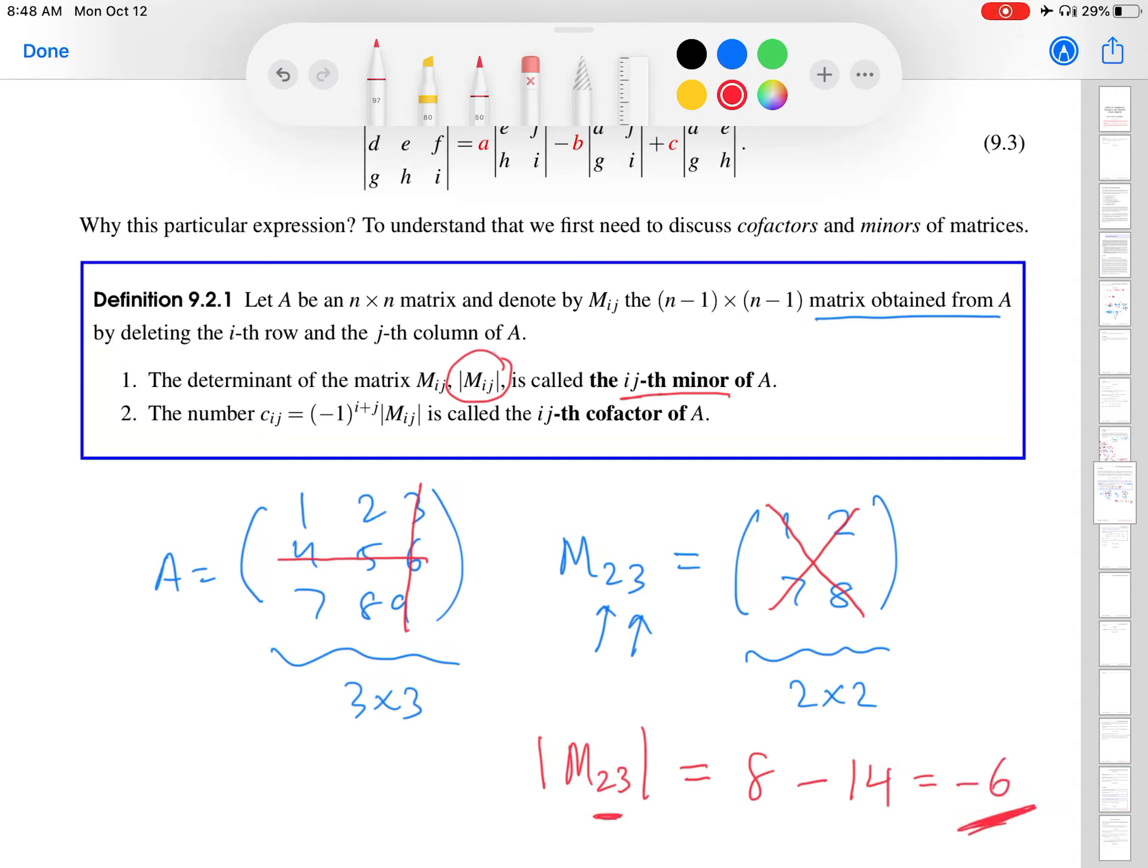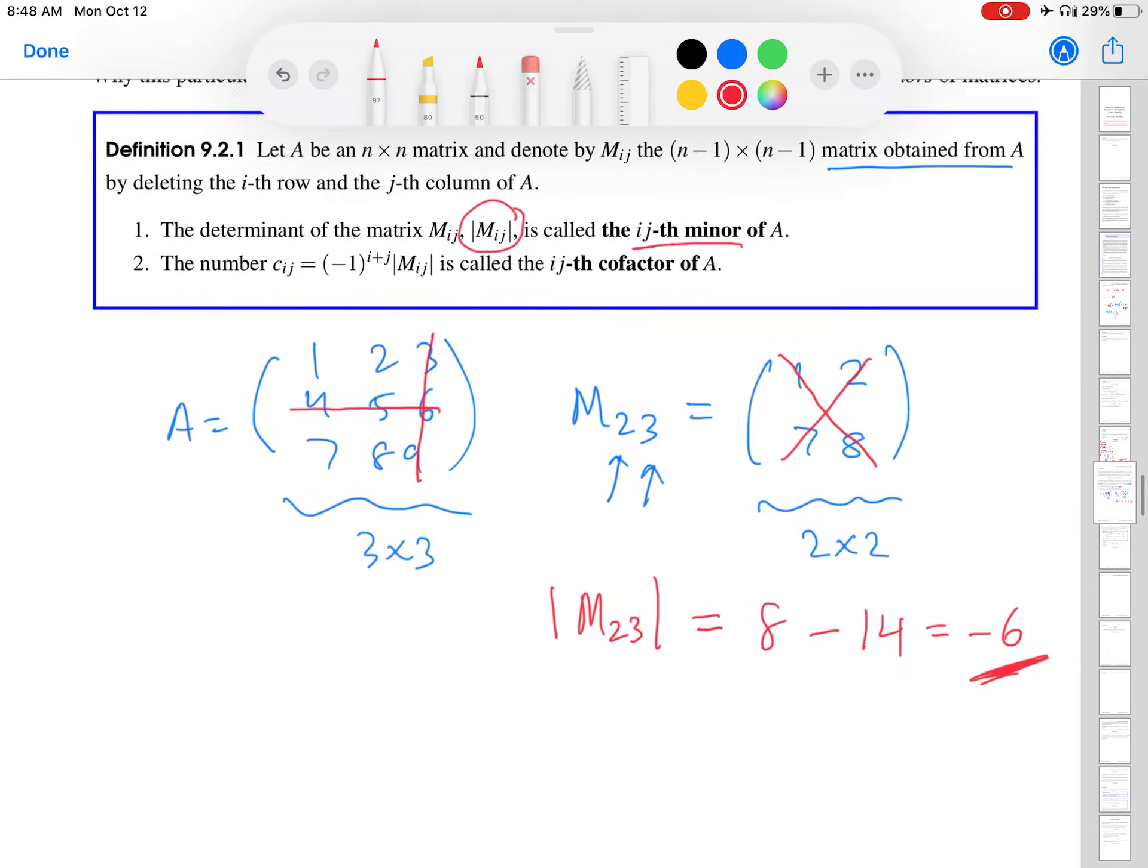So this would be the minor, the 2,3 minor of A. And I want to encourage you to think of this, since we're talking about matrices, as the 2,3 minor. Don't call it the 23 minor, because 2,3 refers to the second row and third column. And we want to keep that information intact.